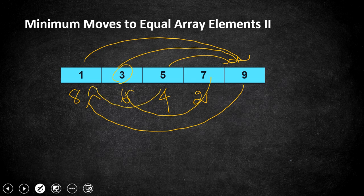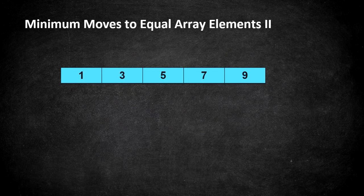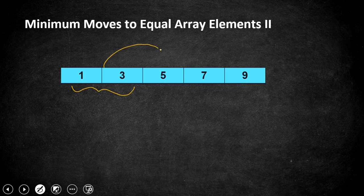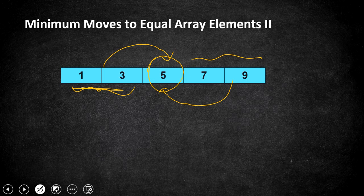Same way, if you're trying to bring all elements down from nine to one or seven to one, it's going to take the same number of operations. So the optimal approach is bringing the lesser elements up to the median and bringing the higher elements down to the median, by adding ones to smaller values and subtracting ones from higher values.